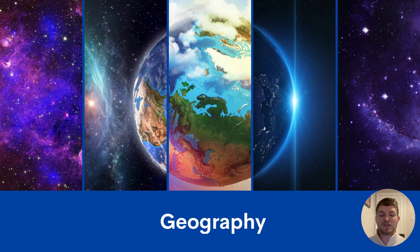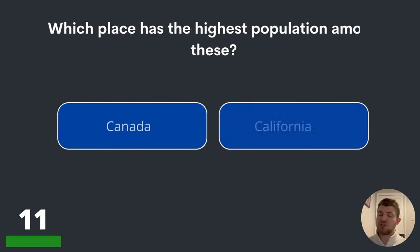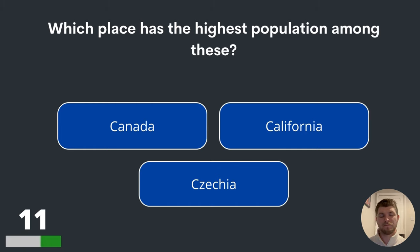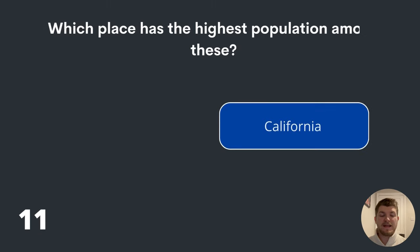Next, we're moving on to some questions on geography. Question eleven. Which place has the highest population among these? Canada, California or Czechia? The answer is California.